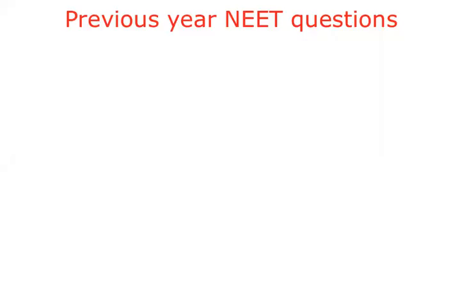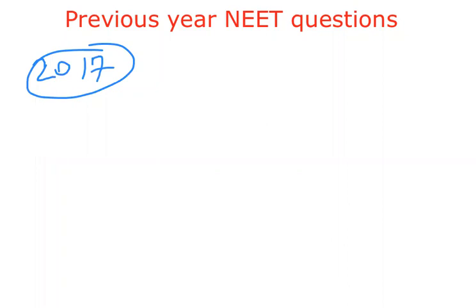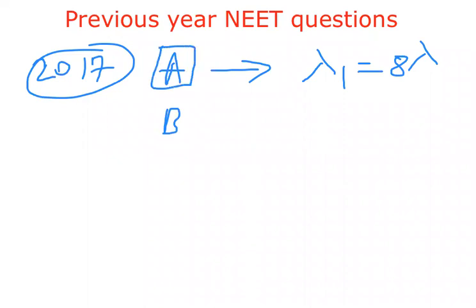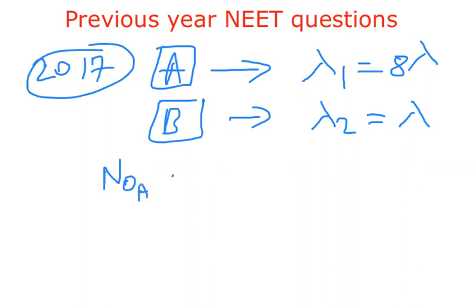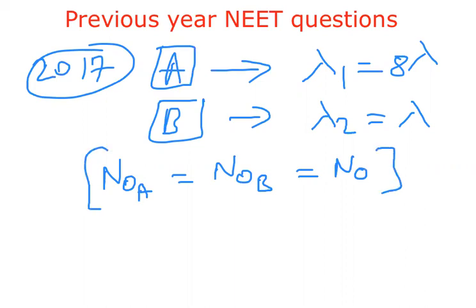We are discussing previous year NEET questions in nuclear physics. In 2017 NEET, they have given two radioactive materials: material A with decay constant 8λ and material B with decay constant λ. Initially both materials have the same number of nuclei, which we write as N₀.